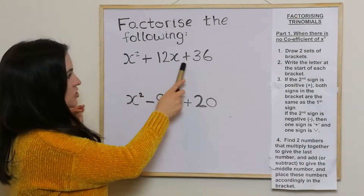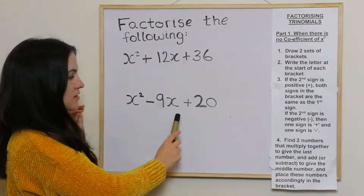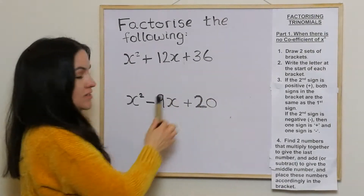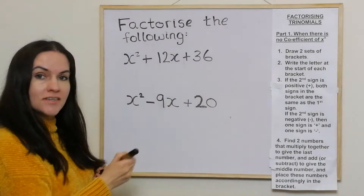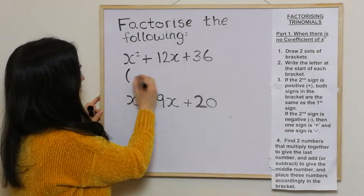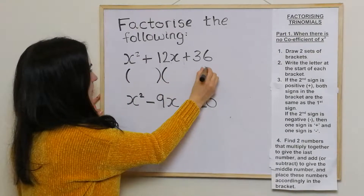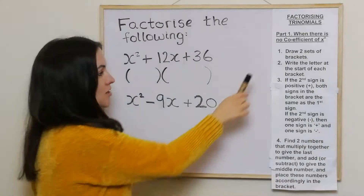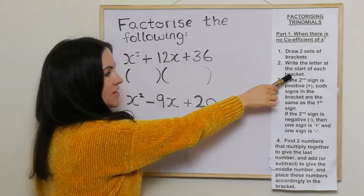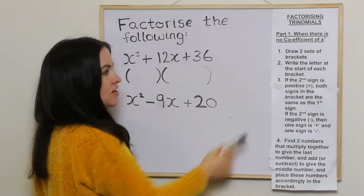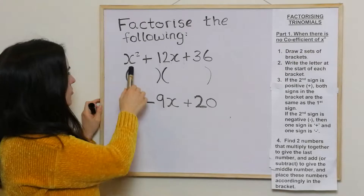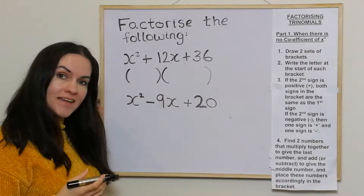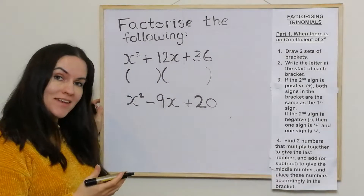When there's no coefficient of x squared, as there is in both of these examples, we draw two sets of brackets. In step two, we write the letter at the start of each bracket. In these examples it happens to be x, but it's worth noting it could be any letter — it could be a, it could be c, it could be anything.